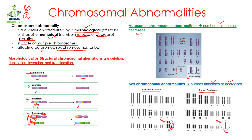Similarly, if one sex chromosome is missing, we observe another chromosomal abnormality known as Turner syndrome. Here we can see all the autosomal chromosomes up to 22, but one sex chromosome — either X or Y — is missing, leading to Turner syndrome. That was our lesson on chromosomal abnormalities. If you have any questions, you can ask in the comment section. I will see you in the next video.